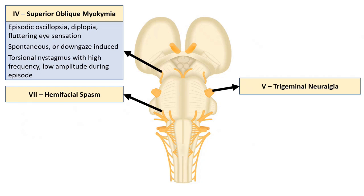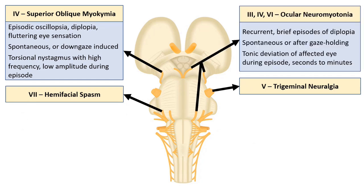If you see somebody during one of these episodes, they'll have high frequency, low amplitude torsional nystagmus, and it can be induced by downgaze, but is sometimes spontaneous.